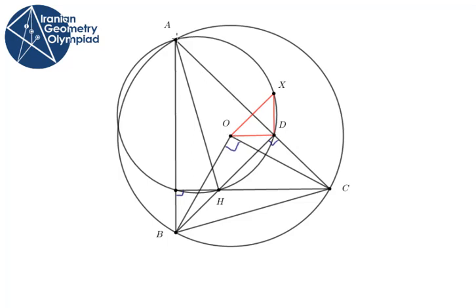And line DA is also the altitude of this triangle. So XD is equal to OD, and we proved the problem. Thank you.